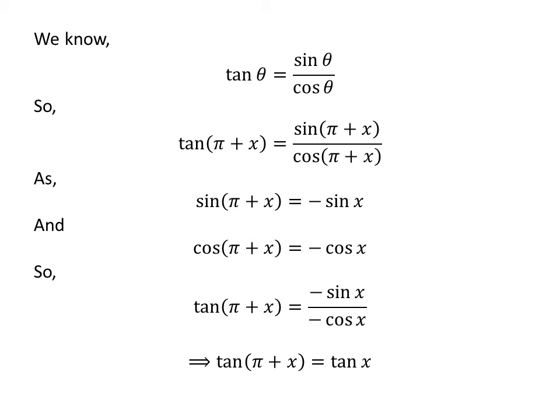Cancelling out the minus sign in the numerator and the denominator gives us tangent of pi plus x is equal to sine of x upon cosine of x, which is equal to tangent of x. So, tangent of pi plus x is equal to tangent of x.